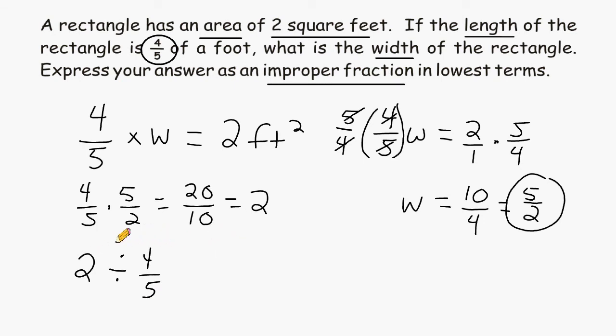So now that we set up the problem as 2 divided by 4 fifths, we can rewrite this whole number as a fraction. So we write 2 as 2 over 1, and then we multiply by the reciprocal of 4 fifths, which is 5 quarters.